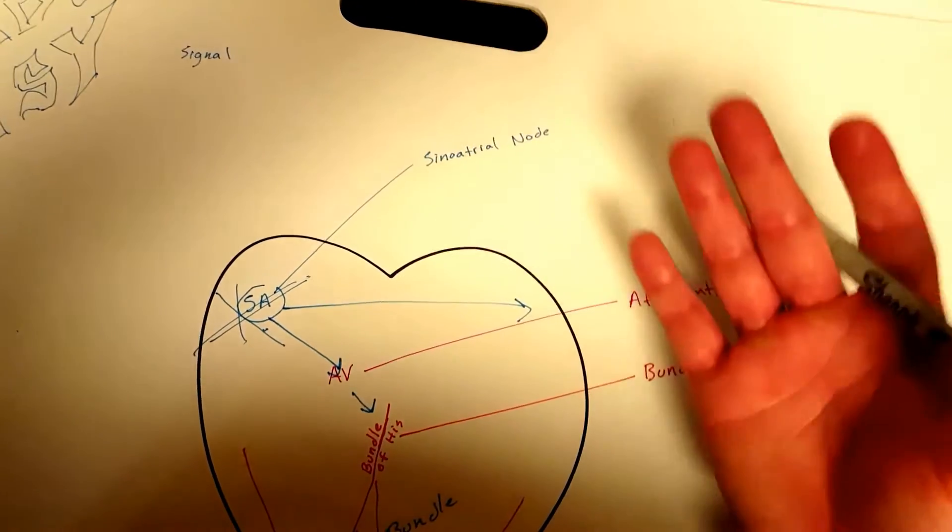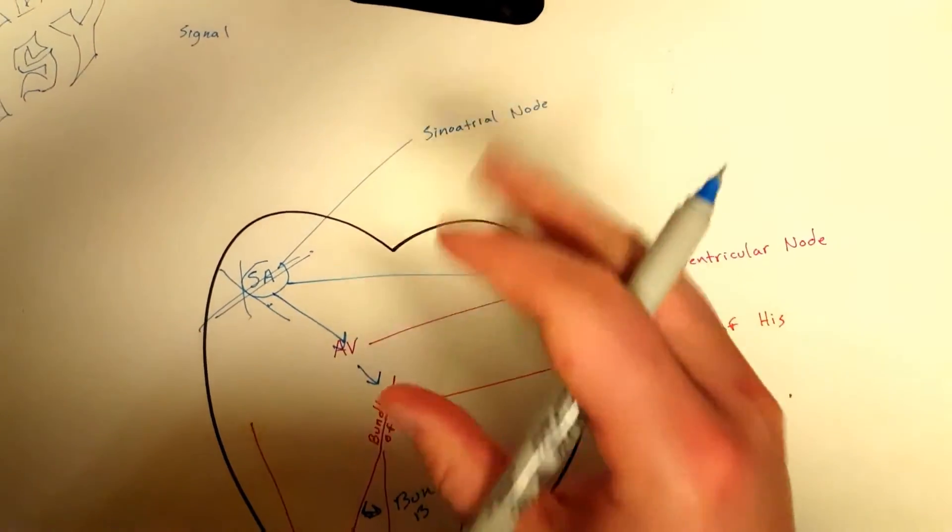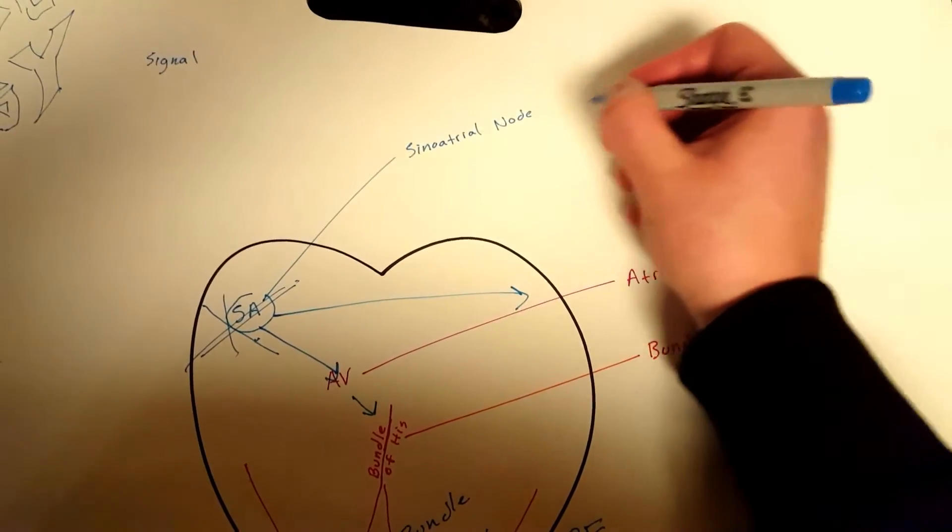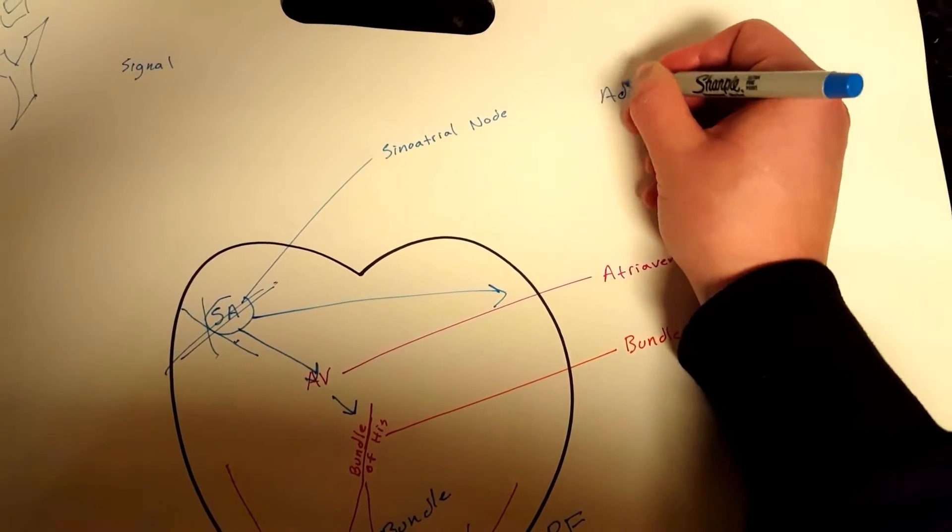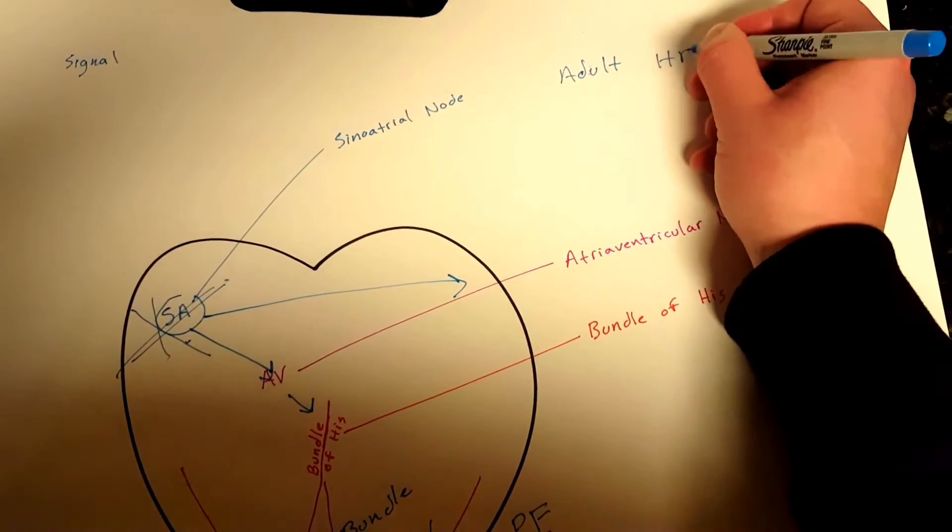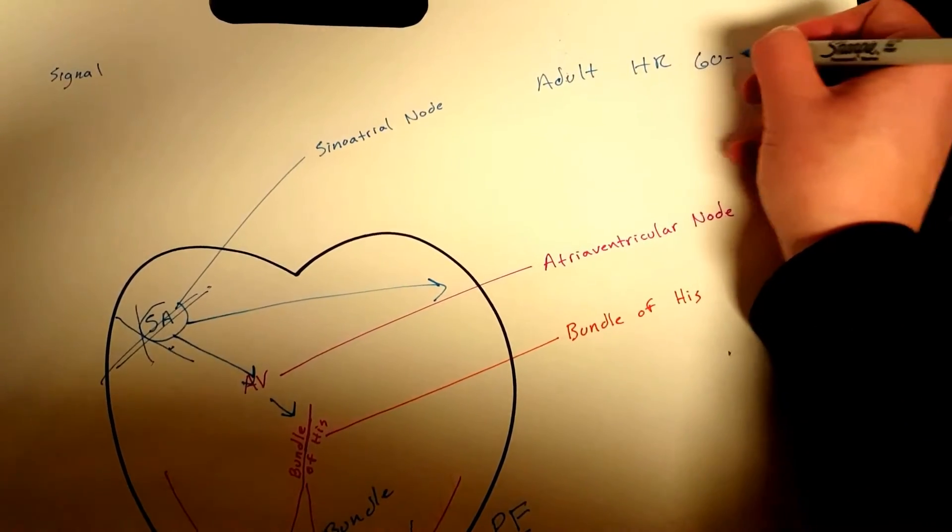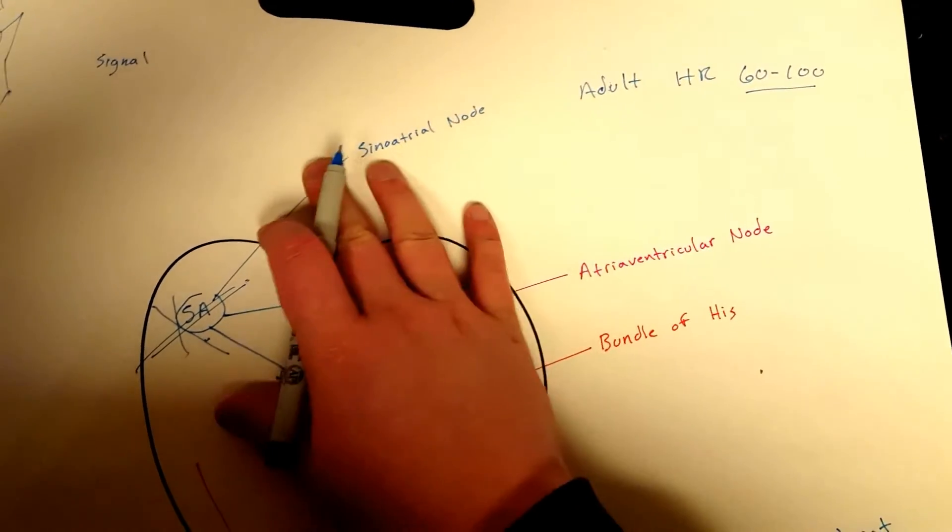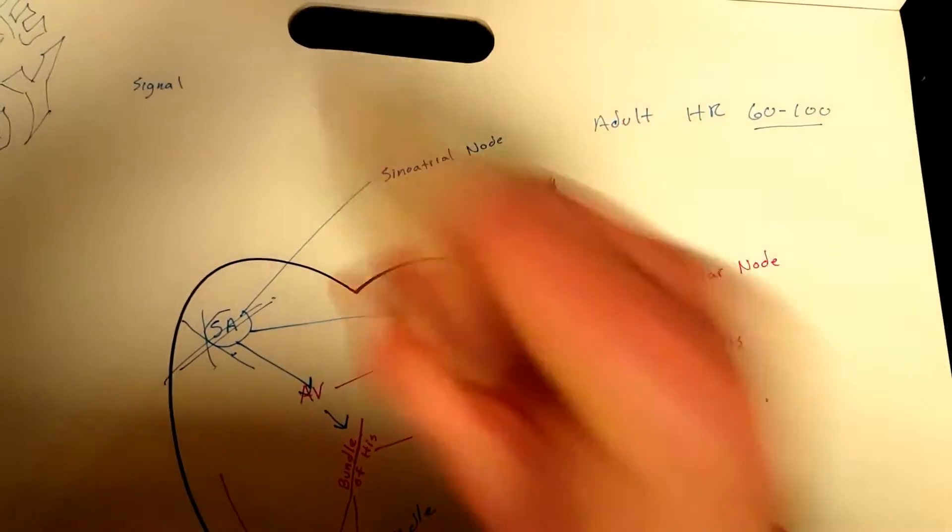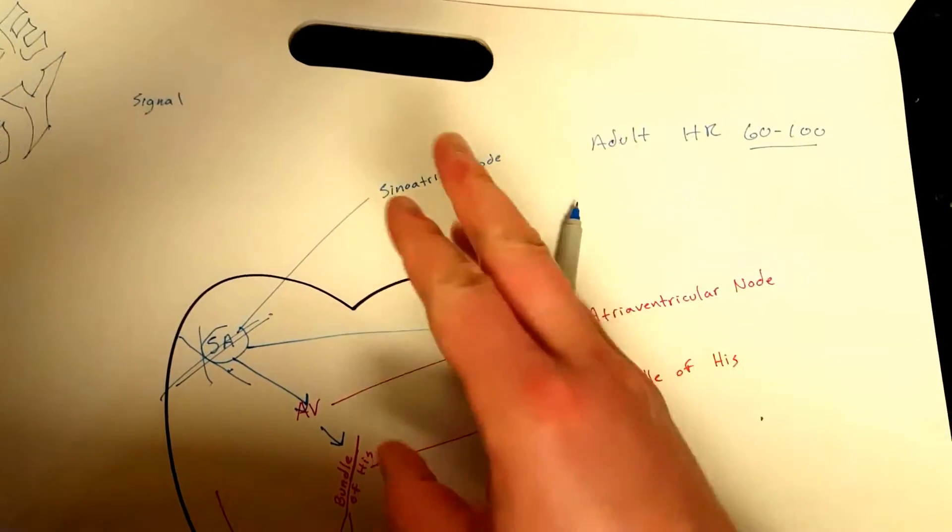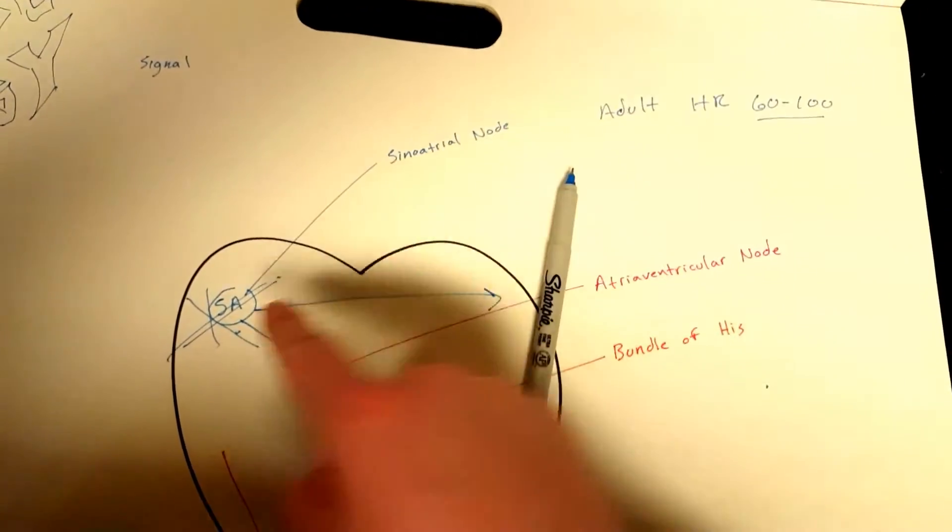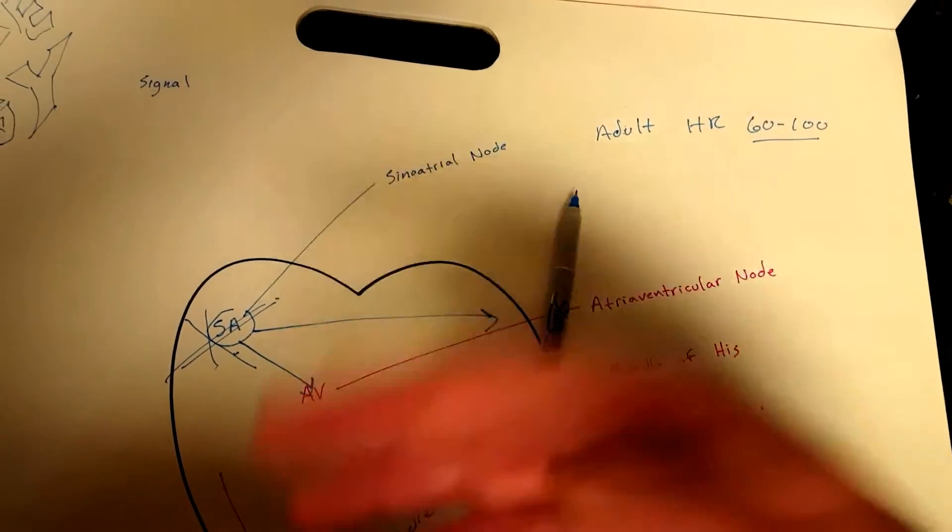You should know that for an adult, a normal heart rate per minute is between 60 and 100 beats per minute. Well, that's because your sinoatrial node busts out between 60 to 100 impulses or signals per minute of electricity to contract your heart muscle.